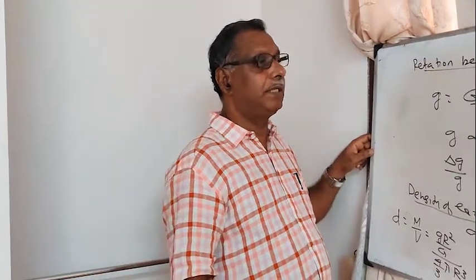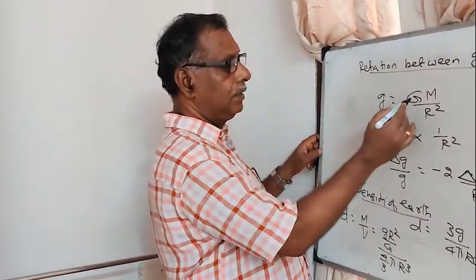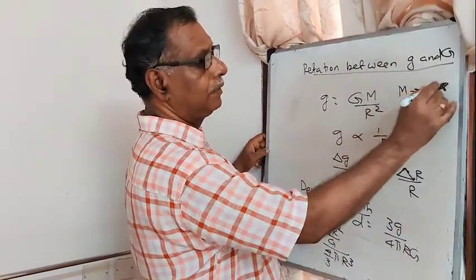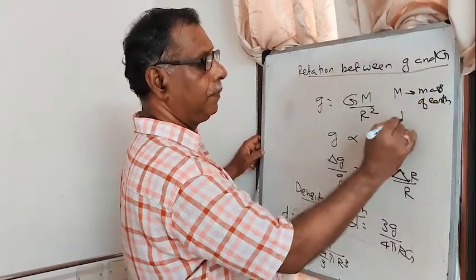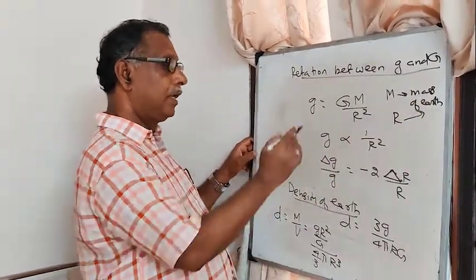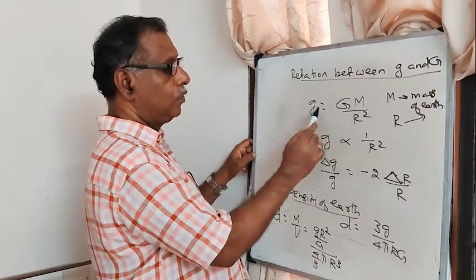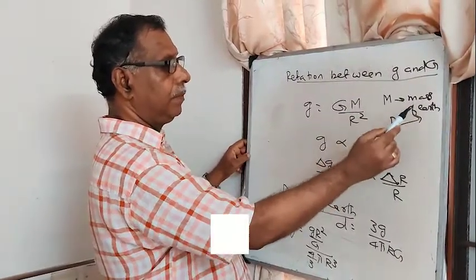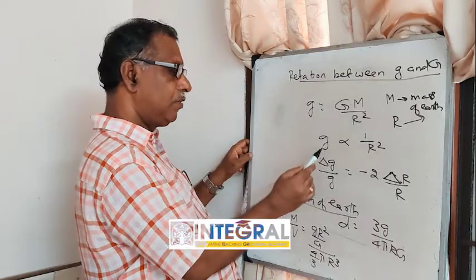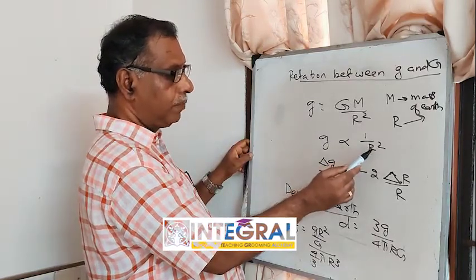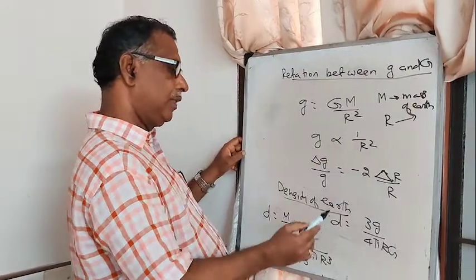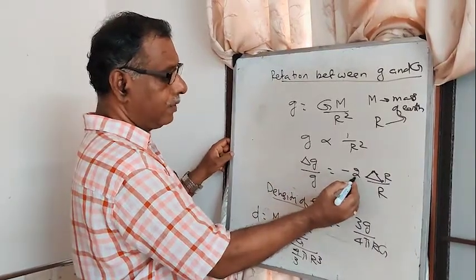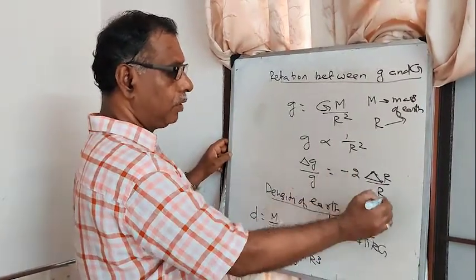The relation between small g and capital G is: g = G·M / R², where M is the mass of the earth and R is the radius of the earth. Since g is proportional to 1/R², we can write: Δg/g = −2·ΔR/R. This is an important equation.